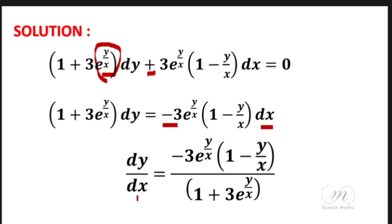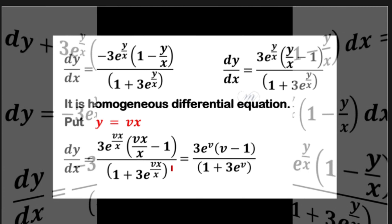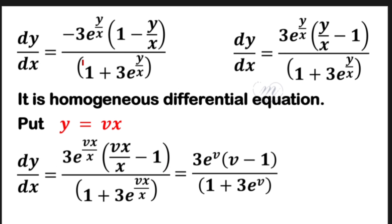Moving dx to the left side goes to the denominator, so 1 plus 3e^(y/x) is on the right side denominator. The numerator becomes minus 1 plus y/x minus 1, with the denominator unchanged. This confirms it is a homogeneous differential equation.